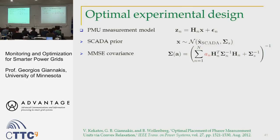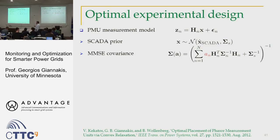We designate a vector a_n, called the assignment vector. For every node n, a_n takes the value 0 or 1. If a_n equals 1, you place a PMU at that bus; if 0, you do not install it. The covariance of the estimator X given this prior is given by the corresponding expression. When the prior term is zero, this reduces to the standard least squares covariance matrix. This formulation also utilizes the SCADA measurements as a prior.